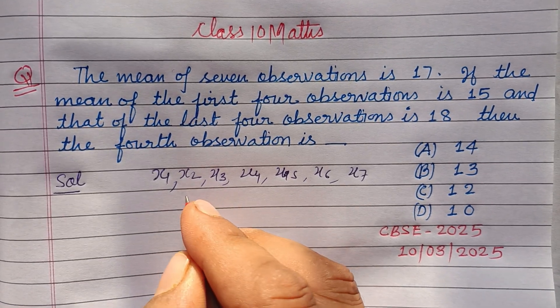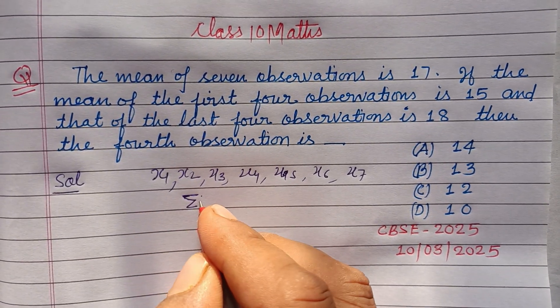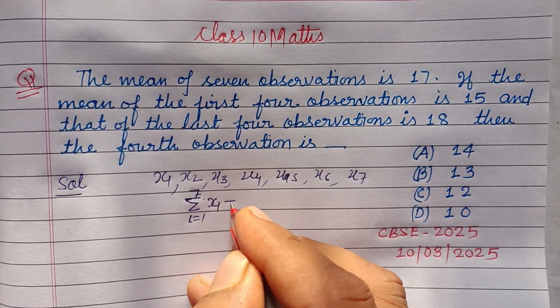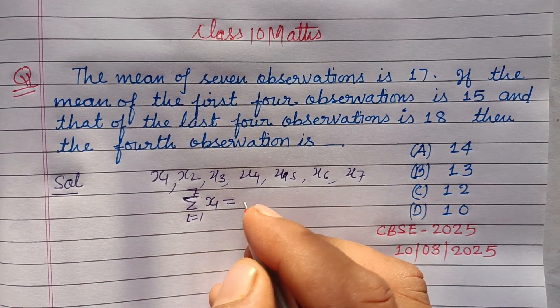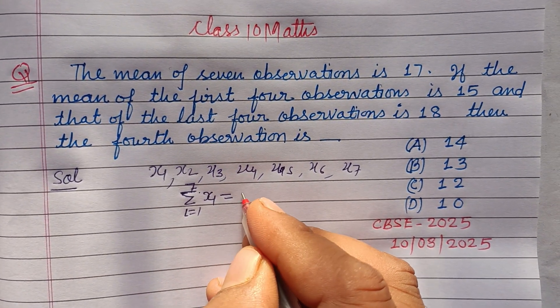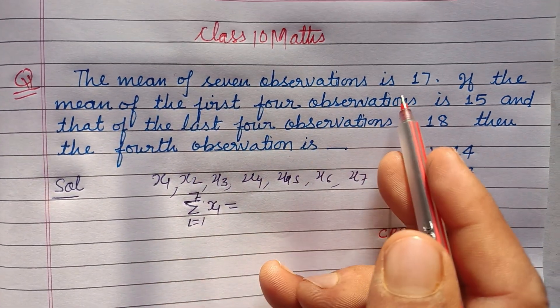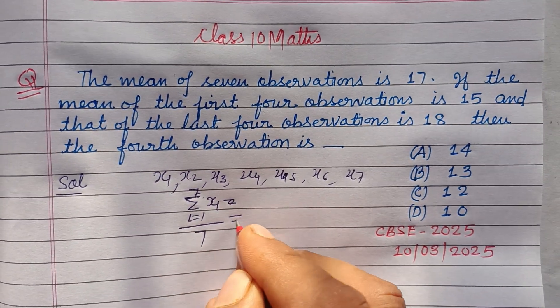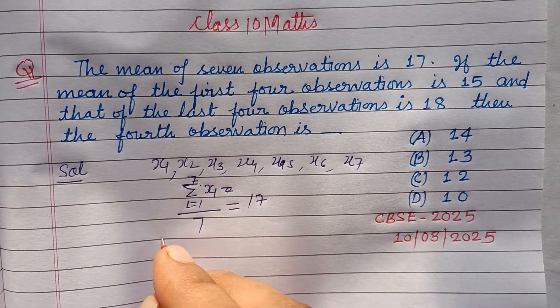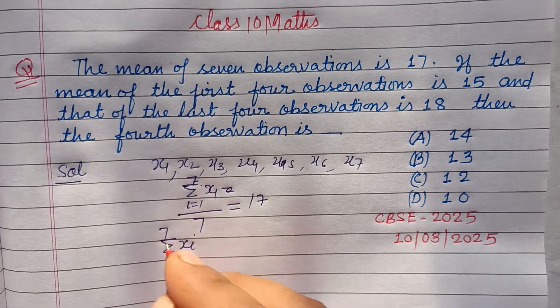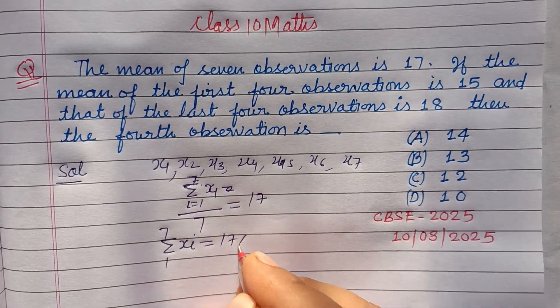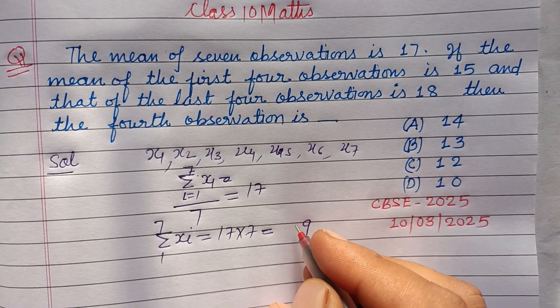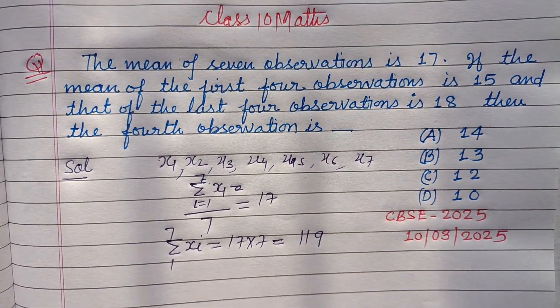So their mean, sigma i equals 1 to 7 of xi divided by 7. The mean of the 7 observations is 17, so sigma xi upon 7 is given to us as 17. Therefore, sigma xi from i equals 1 to 7 is 17 times 7, which equals 119.